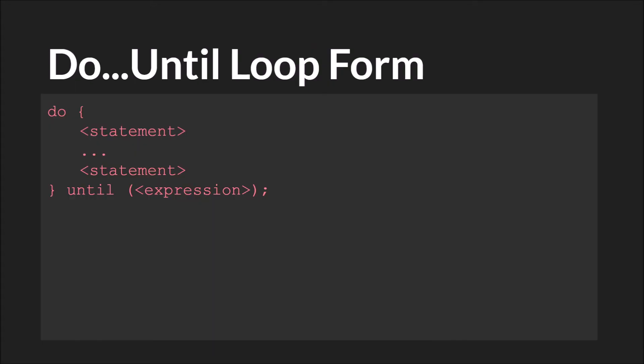A do until loop looks like this. You say do, then you write the code, then you say until the expression. Again, this expression is evaluated like in an if statement or a while statement. It's checking for true or false, but if it is false, it will repeat this. If it is true, it will stop.